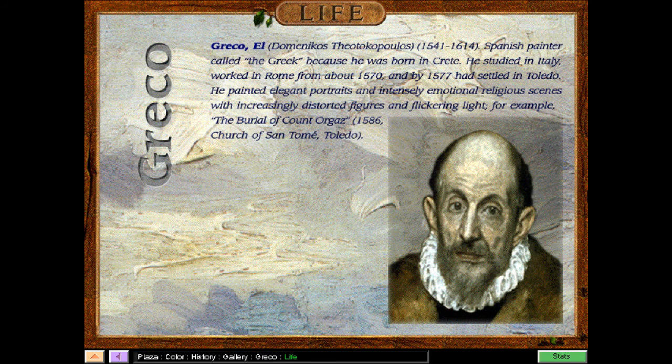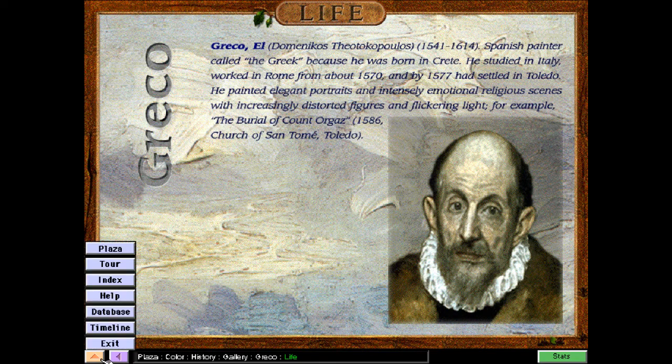Here he is — El Greco. Looks like a Greek name. He was a Spanish painter called the Greek because he was born in Crete. He studied in Italy, worked in Rome from about 1570, and by 1577 had settled in Toledo. He painted elegant portraits and intensely emotional religious scenes with increasingly distorted figures and flickering of light — for example, The Burial of Count Orgaz. Let's go back to the index.